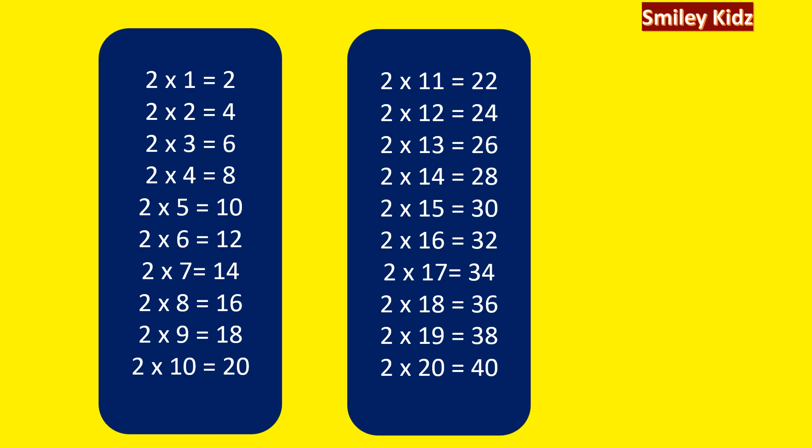Now let us revise it again. 2 ones are 2. 2 twos are 4. 2 threes are 6. 2 fours are 8. 2 fives are 10. 2 sixes are 12. 2 sevens are 14. 2 eights are 16. 2 nines are 18. 2 tens are 20.